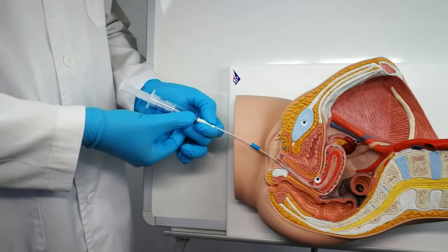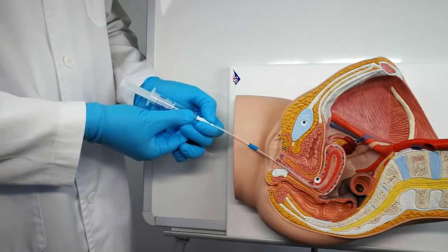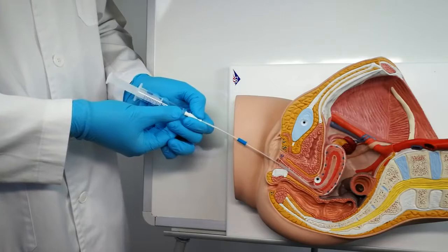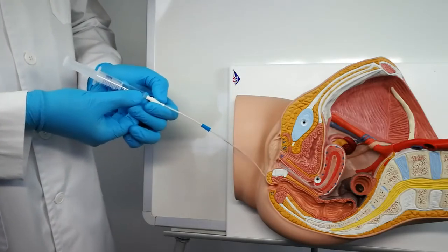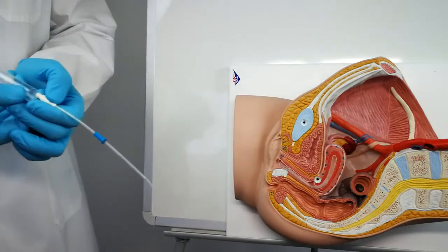Remove the catheter connected to the syringe avoiding any contact with the vaginal walls. Clean the external surface of the catheter with a sterile gauze to eliminate cervical mucus.